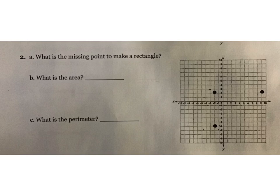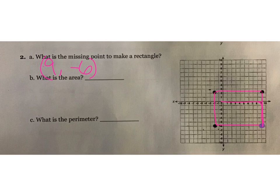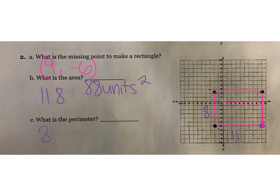Let's look at this one. Go ahead and see if you can figure out what the missing point is going to be. I drew the sides where they're going to meet, so our missing point is right here — at positive 9 because we're going over 9, and then negative 6. To find our area, we count boxes: 11 by 8. So 11 times 8 gives me 88 units squared. Perimeter is all the way around: 8 plus 8 plus 11 plus 11, which is 16 plus 22, giving me 38 units.